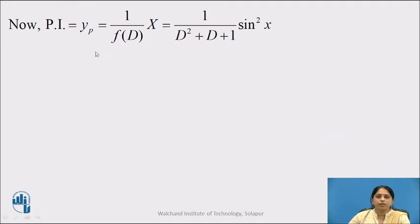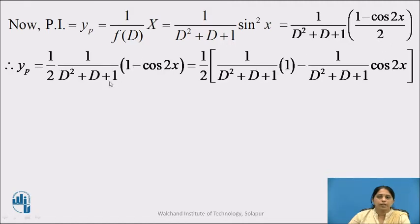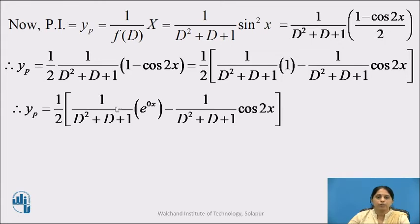Now let us find the particular integral yp. By definition it is 1 upon f(D) into X, so we get 1 upon (D² + D + 1) into sin²x. We convert sin²x to sin/cos form: sin²x = (1 − cos 2x)/2. The 1/2 is a constant and can be taken outside the operator. Therefore yp = (1/2) · [1/(D² + D + 1) · 1 − 1/(D² + D + 1) · cos 2x].